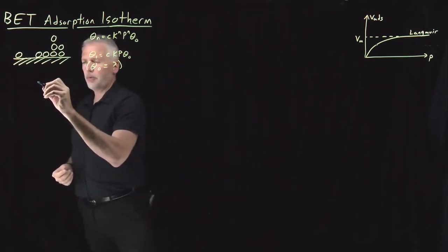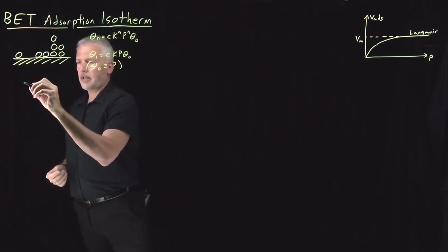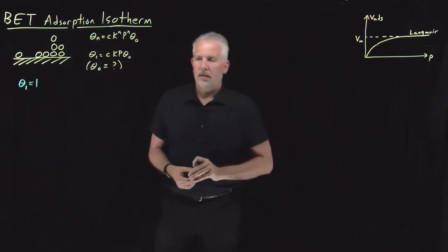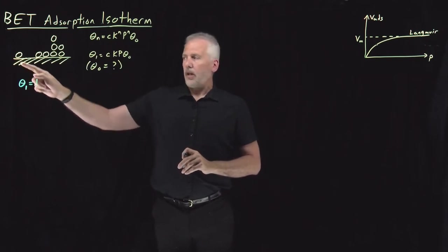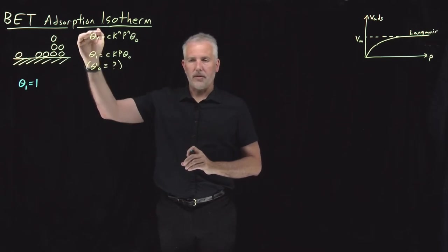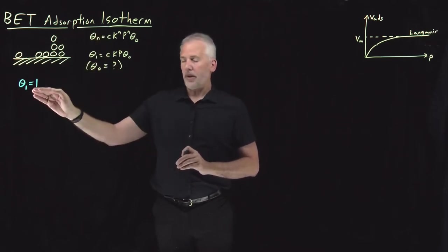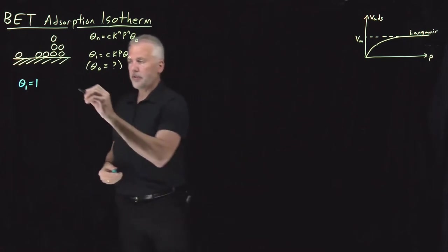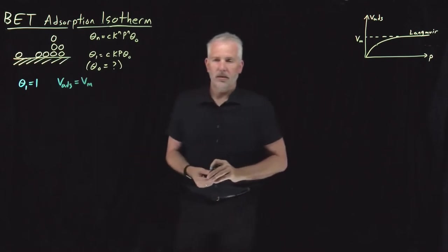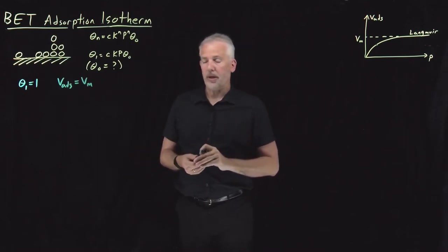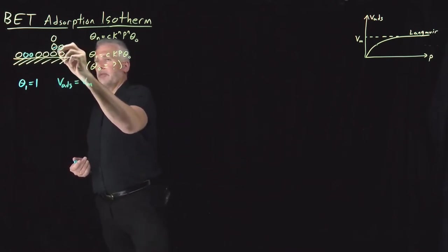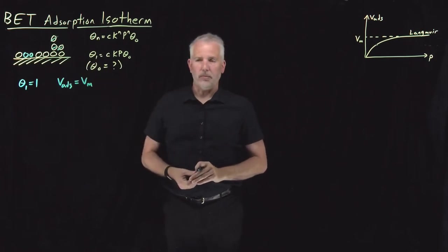Let's take a few quick examples to get our bearings. Suppose theta sub 1 is equal to 1 — 100% of the surface is covered at the first level, and none is covered at the second, third, fourth, or zeroth level. So I've got one monolayer covering the surface, meaning the total amount of gas adsorbed is whatever it takes to cover one monolayer.